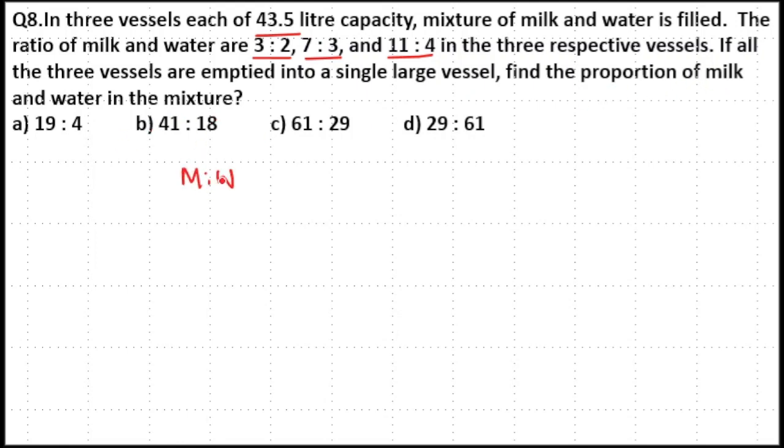So we have milk and water in the first vessel in the ratio 3 is to 2. In the second vessel, it is in the ratio 7 is to 3. In the third vessel, it is in the ratio 11 is to 4. 3 plus 2 is equal to 5 parts, 7 plus 3 is equal to 10 parts, 11 plus 4 is equal to 15 parts.